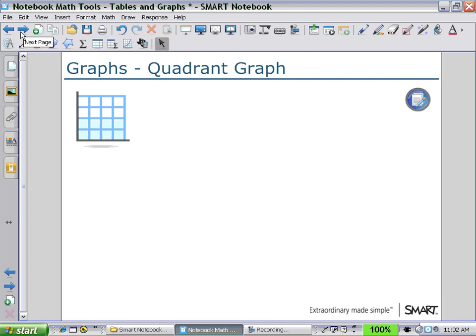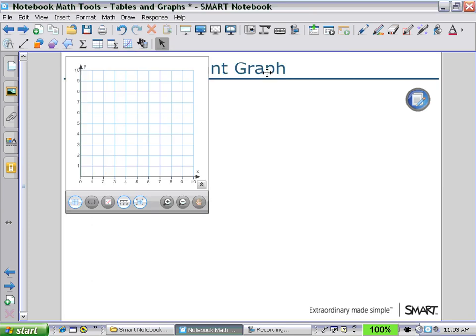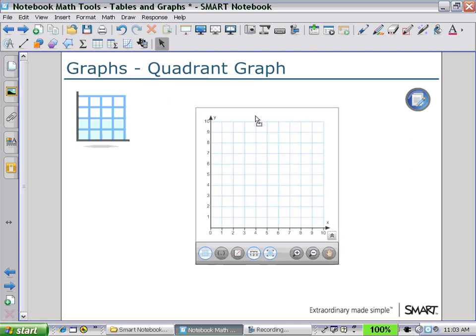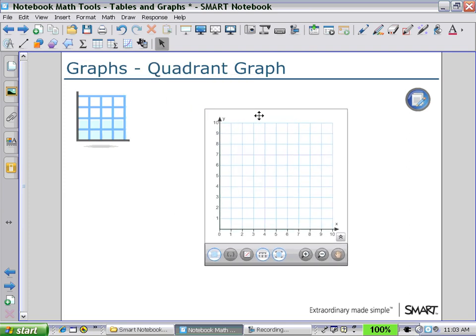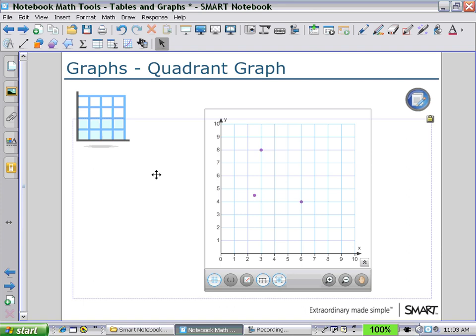For our quadrant graphs, you can use the same process. With the graph icon selected. And then quadrant graph. Again, using the outside space around the grid to move the graph. Selecting the graph to resize. Double clicking to put in points. And single clicking to put in coordinates. And double clicking to remove points.